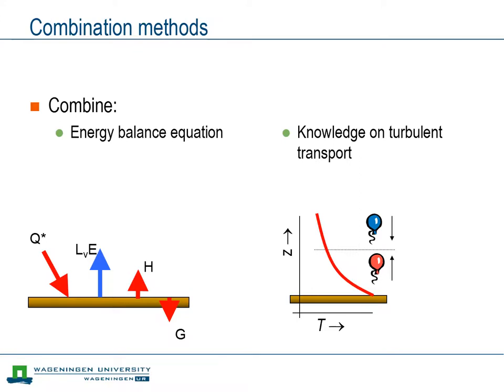The idea of combination methods is that they provide information about the surface fluxes of sensible and latent heat by combining the concept of the surface energy balance with what we have learned about turbulent transport.